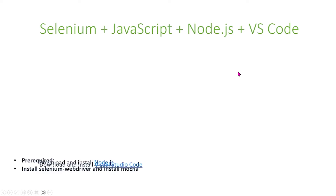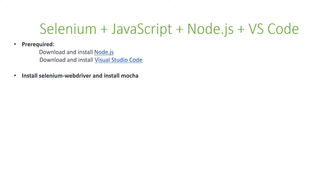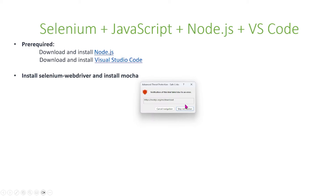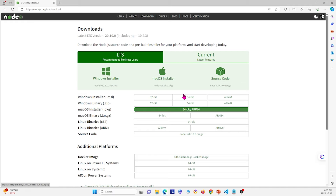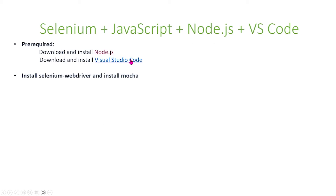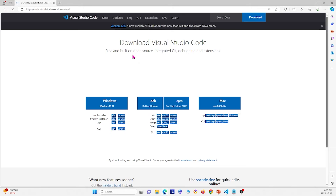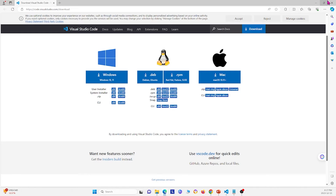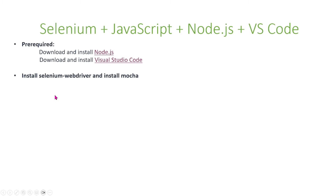In order to create a project using all of these components, you must do a few things first. First, you've got to download and install Node.js. When you open their website, you can just download it from there. Next, you also want to install Visual Studio Code, which is the IDE that we'll be using — open it up and you can download it from the link. After that, you have to install Selenium WebDriver and also install Mocha.